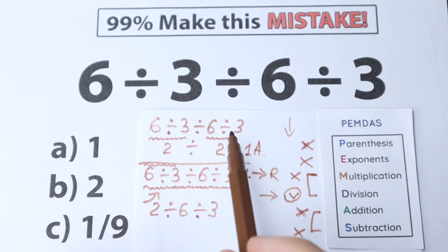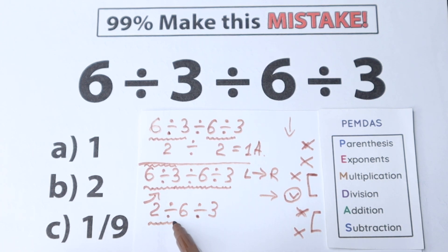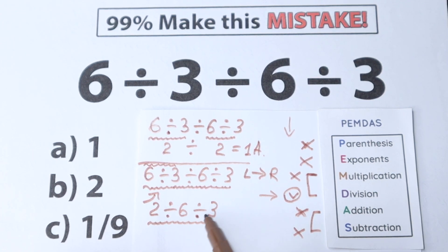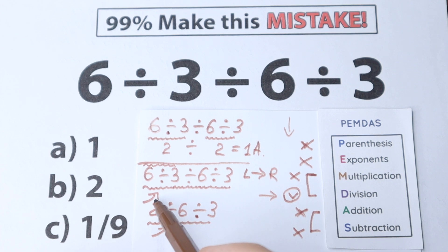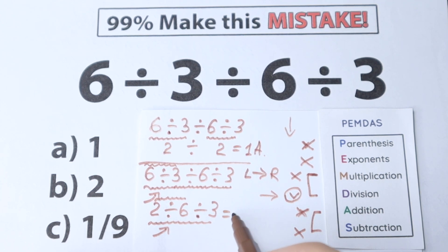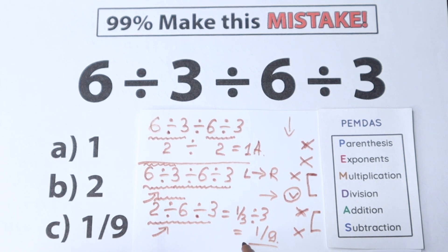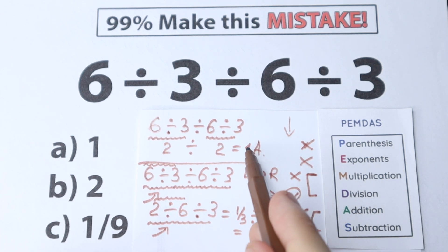Now here is a really interesting moment. This solution goes back to grouping the right-hand side as 6 divided by 3, but we cannot do that as a second step, because we must scan for the first sign from left to right. That gives us 2 divided by 6, which is not 6 divided by 3 — it is a completely different step. So 2 divided by 6 equals 1/3, and dividing by 3 gives us 1/9.